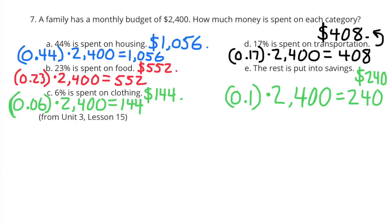E. The rest is put into savings. If you total up 44% plus 23% plus 6% plus 17%, you'd get 90%. That leaves 10% of 2,400 to go into savings. So one-tenth times 2,400 equals 240. They would put $240 into savings.